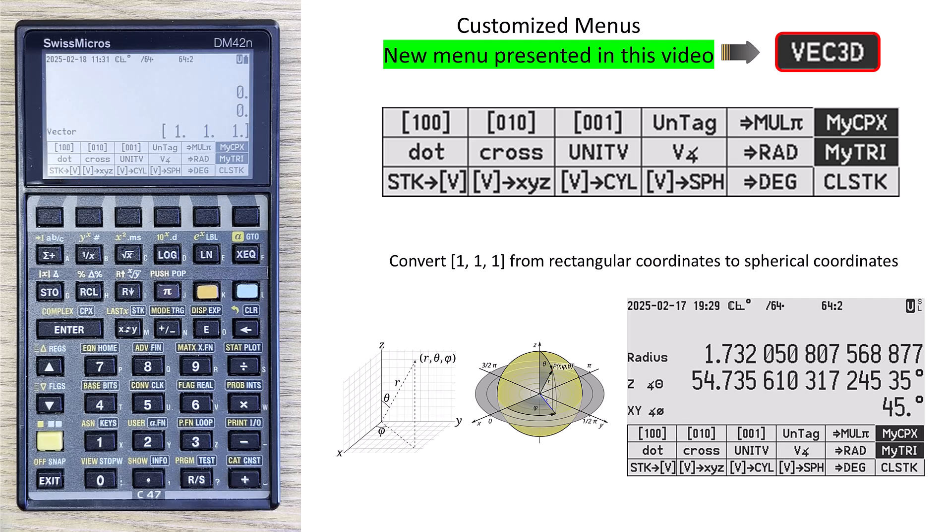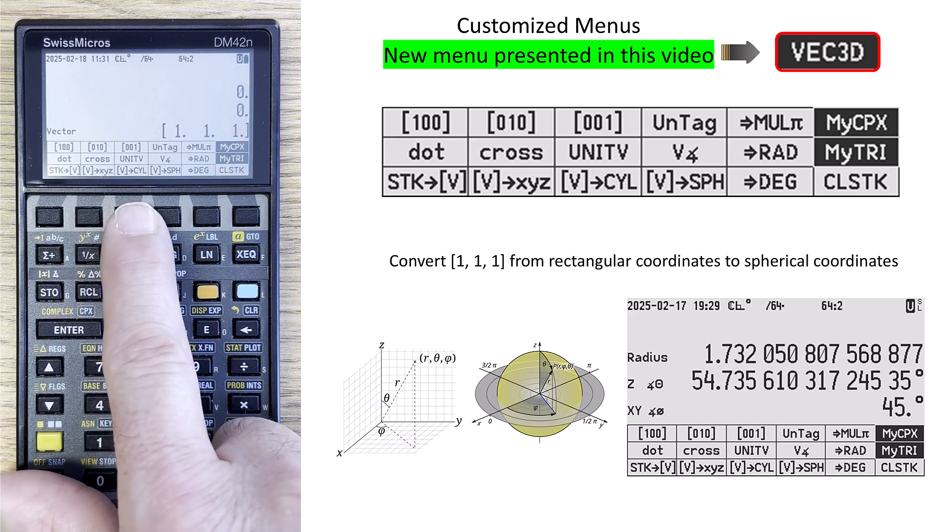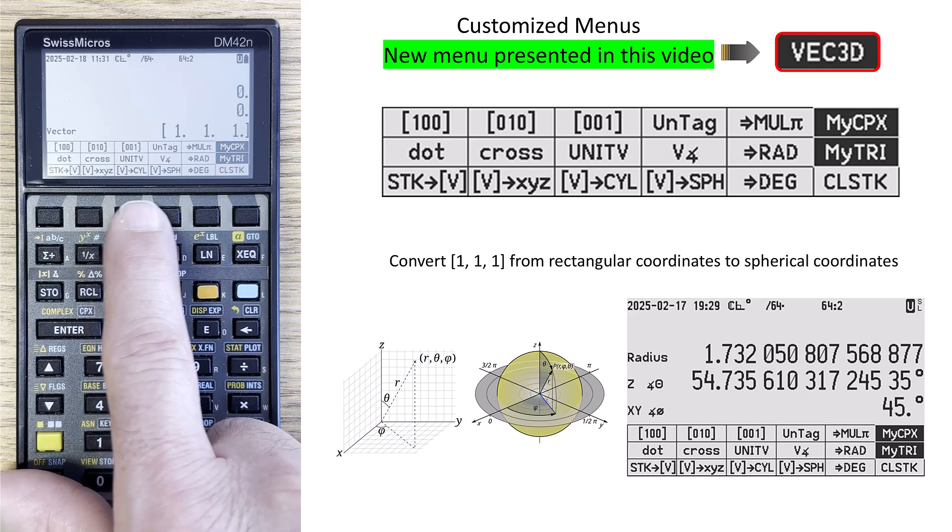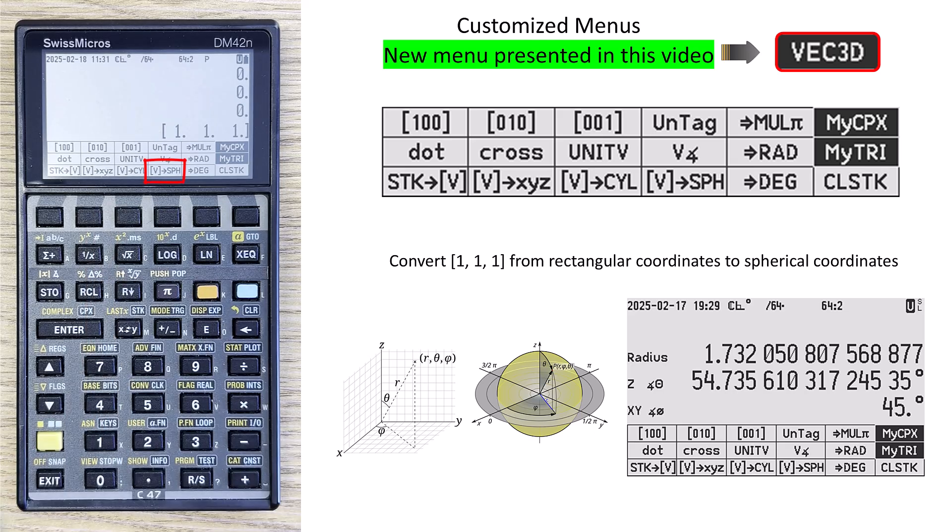And then, now that I have a vector format, I can put the vector back onto the stack in different coordinate planes, so rectangular coordinates, cylindrical, or spherical. In this case, I want spherical. So with those two presses of the button, I've now converted a vector from rectangular coordinates to spherical coordinates. Pretty straightforward, and that's the reason I created this menu.